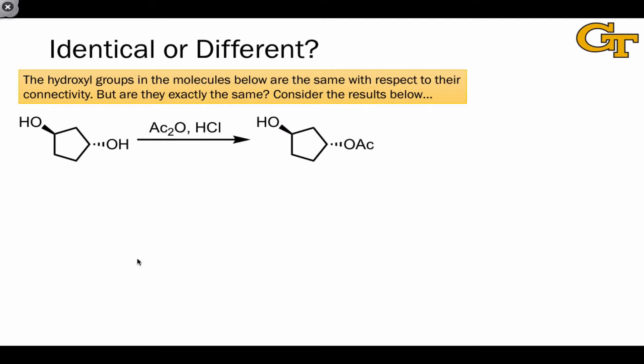Let's take a look at some experimental results. Don't worry about the details of this reaction for now. The thing to notice is that this reaction changes the hydroxyl group into an acetoxy group, where AC stands for acetyl. All we need to know for the time being is that this is a substitution-type reaction where H is replaced with the acetyl group. When we treat this molecule with conditions leading to this reaction, we observe only one product, the one that's shown here.